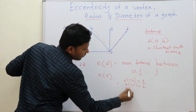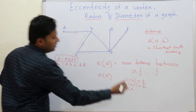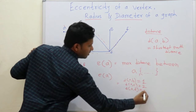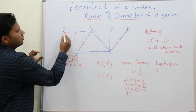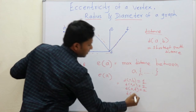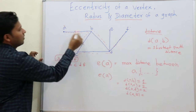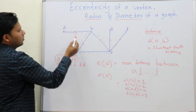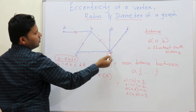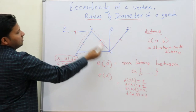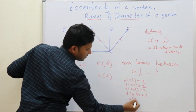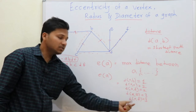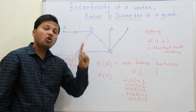Distance from A to D: shortest path is A-B-D, so that is 2. Distance from A to E is 1, 2, 3 — so 3. And distance from A to F is also 1, 2, 3 — so the distance is 3. These are the distances from A to all other vertices.